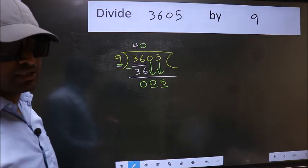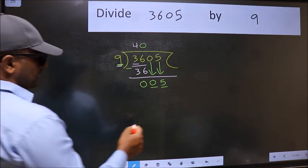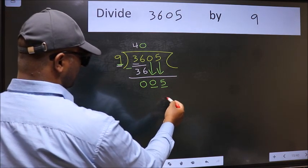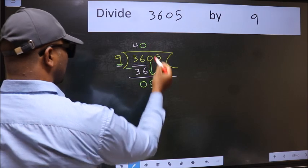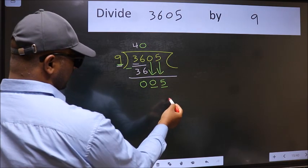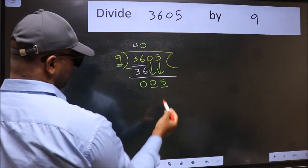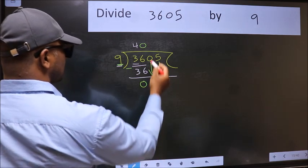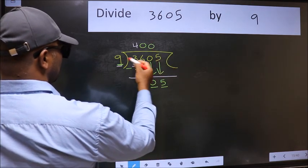Instead of that, what you should think of doing is which number should we take here? If I take 1, we will get 9, but 9 is larger than 5. So what we should do is we should take 0. So 9 into 0 is 0.